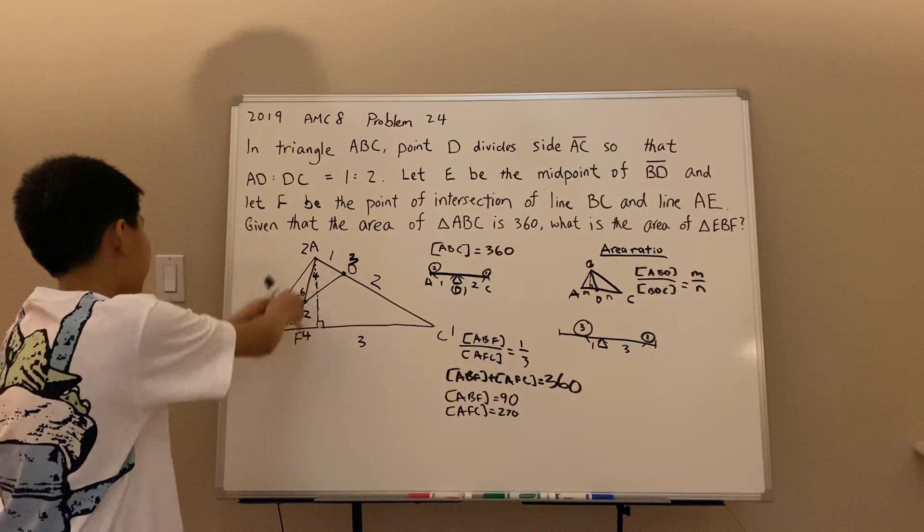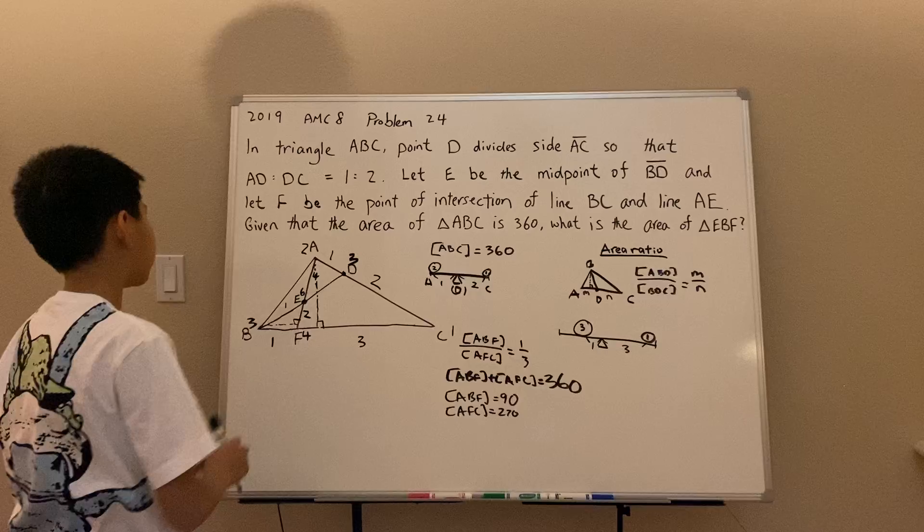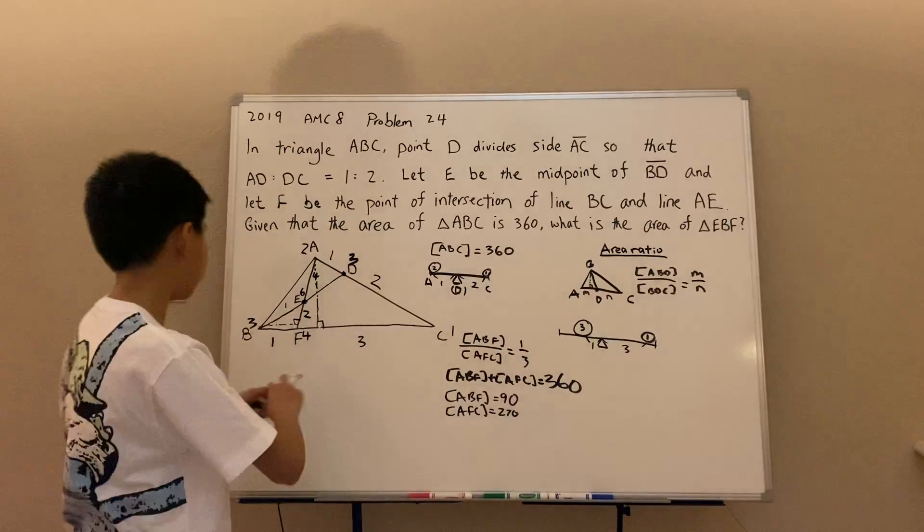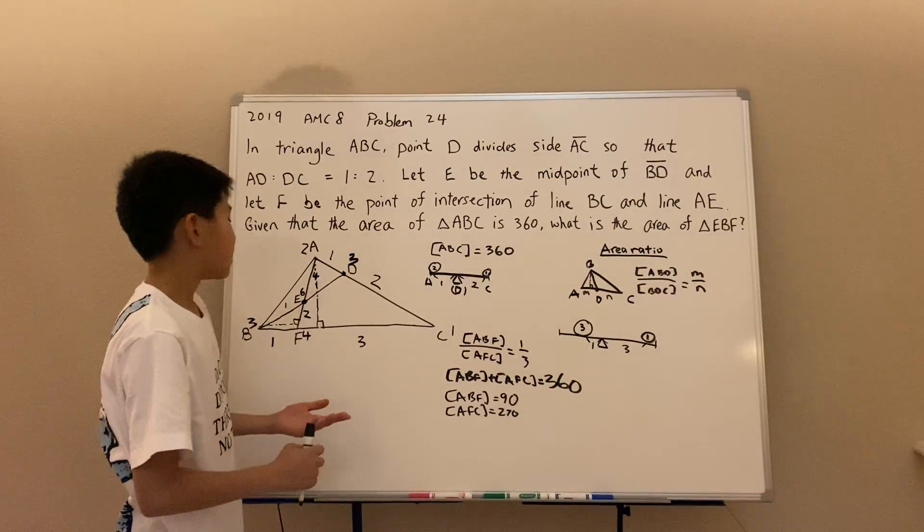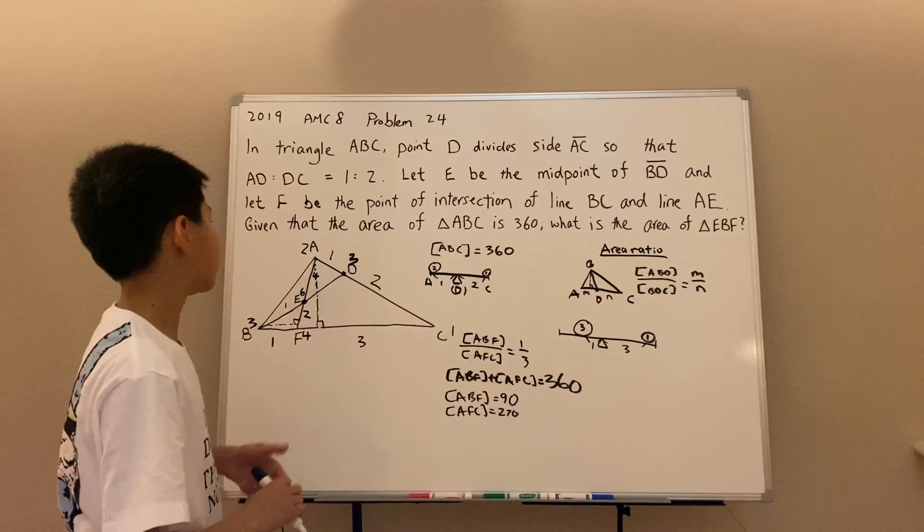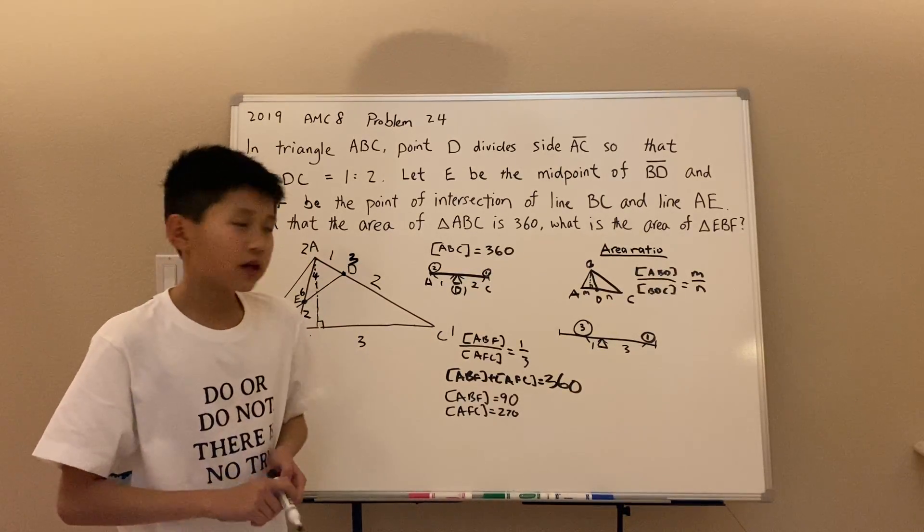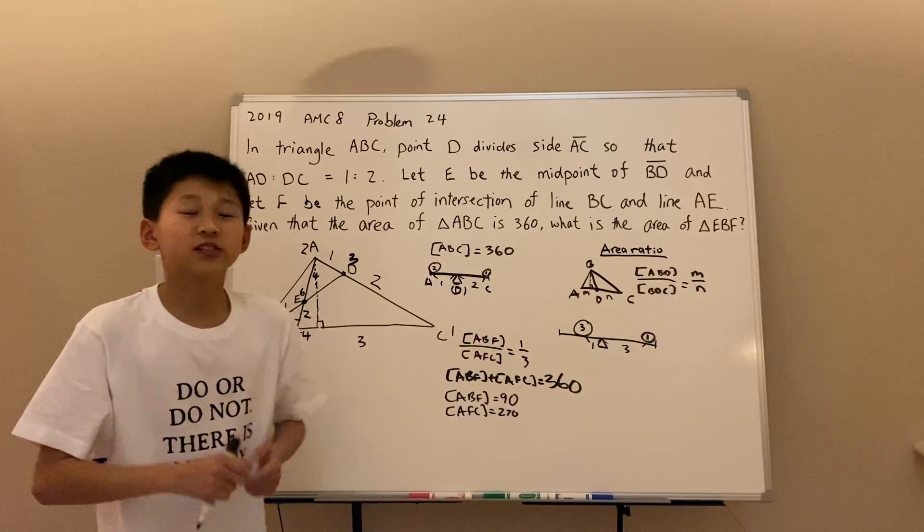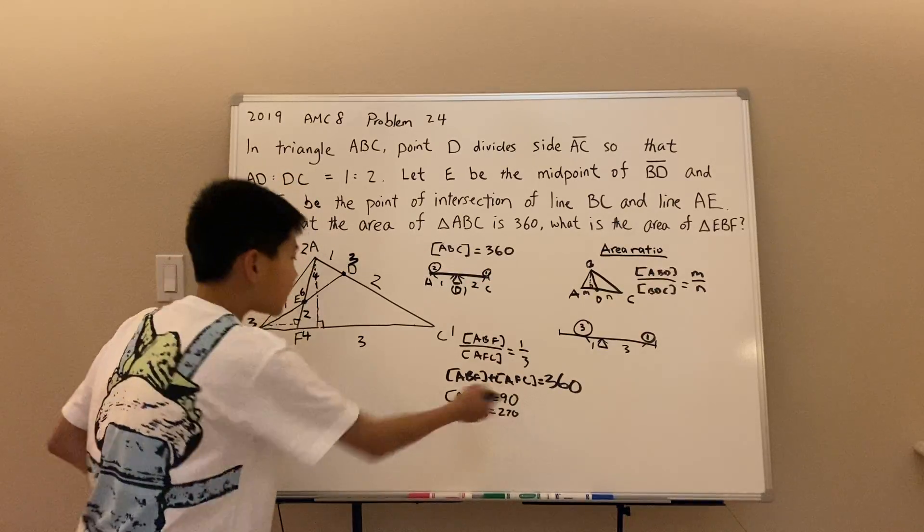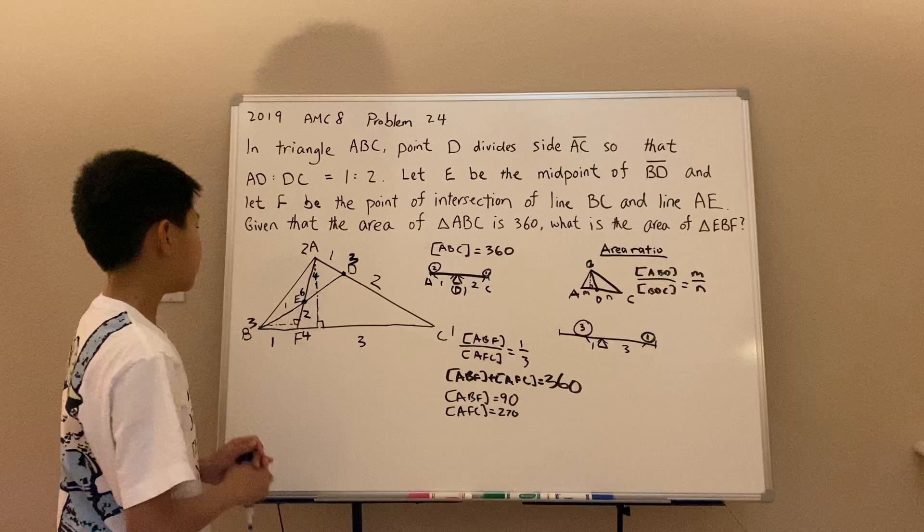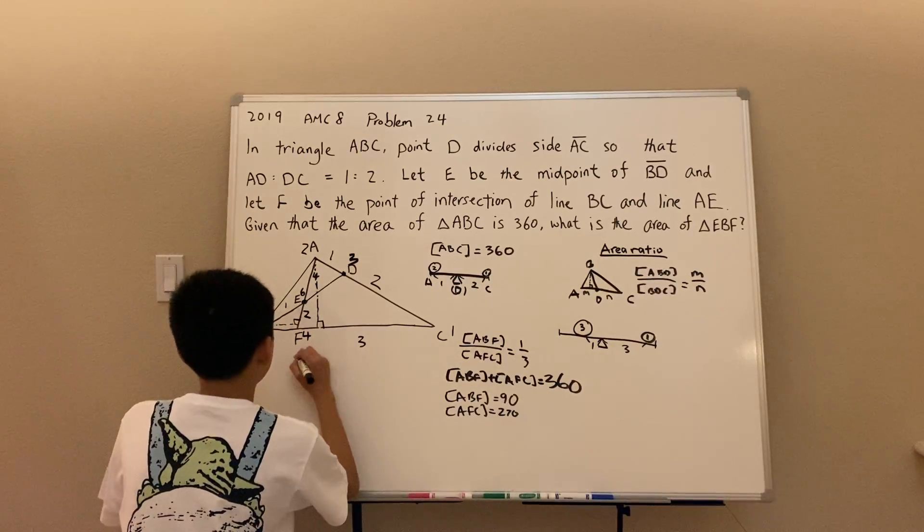BEF and BAE have the same height. That means the ratio of the areas of those two triangles is just 2 to 4, which is 1 to 2. We also know the sum of the areas. 90. We just found out. So let's write that down. Almost there.